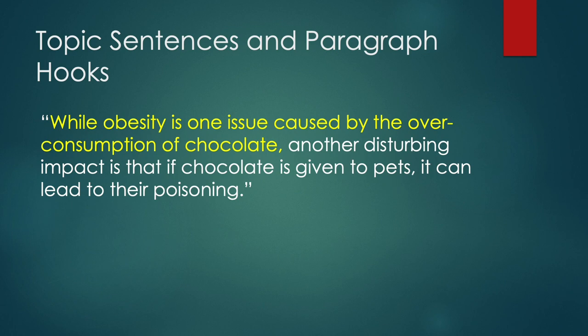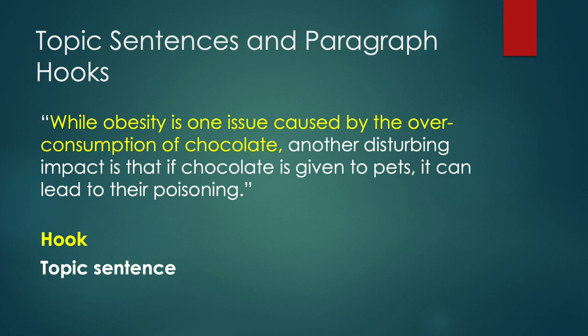While obesity is one issue caused by the over-consumption of chocolate, another disturbing impact is that if chocolate is given to pets, it can lead to their poisoning. This sentence starts with a paragraph hook, coloured yellow, and then it has the topic sentence in white. The paragraph hook links back to the previous paragraph — you can see it talks about the problem of obesity. And this paragraph covers another problem: the dangers to pets if they eat chocolate.